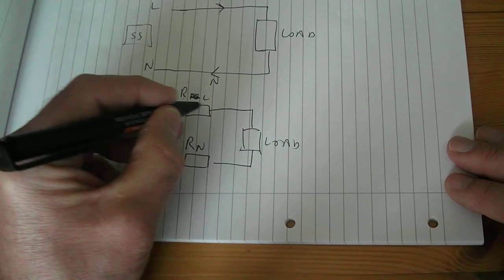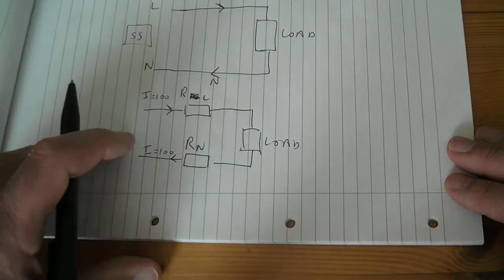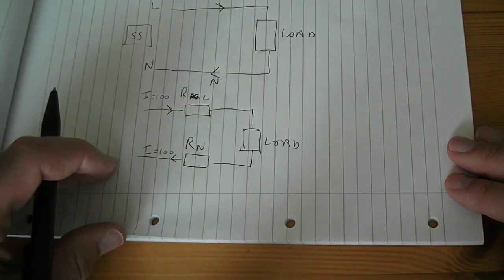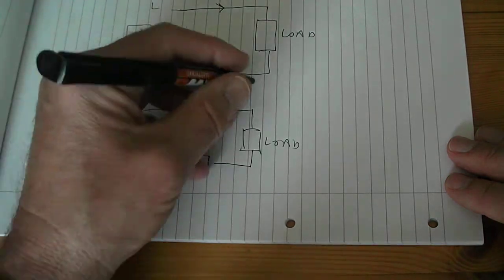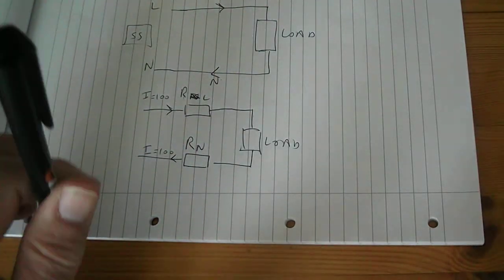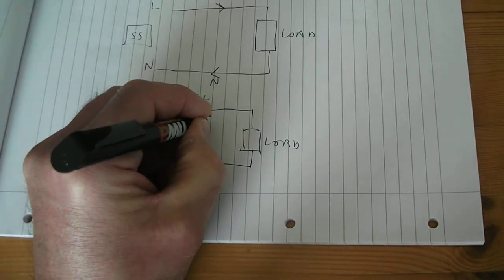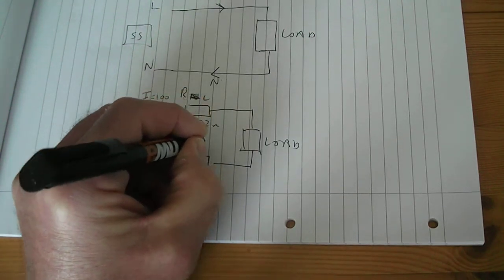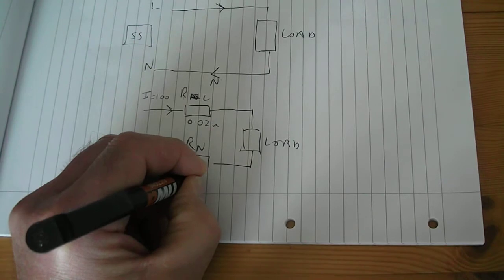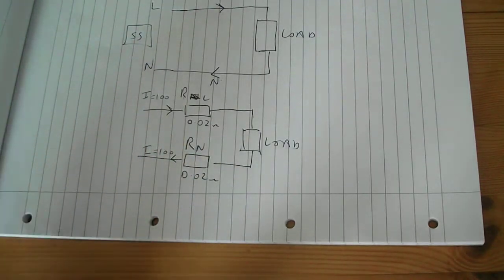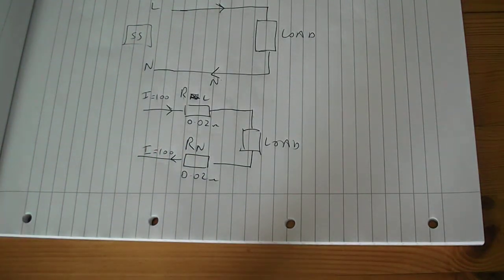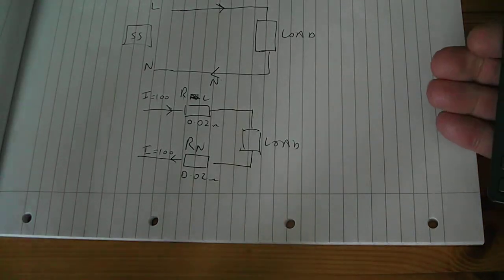If I know the resistance of this conductor by measurement or by calculation, say for example the resistance of this piece of cable was 0.02 of an ohm and this was 0.02 of an ohm, I can work out the power loss in that cable, I can work out the power loss in that cable from I squared R.